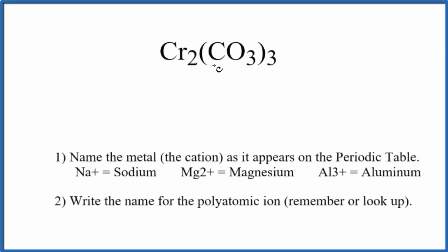To write the name for Cr2(CO3)3, we first need to recognize that the CO3 is the carbonate ion. In fact, we have three carbonate ions, so we have the carbonate ion bonded to a transition metal.